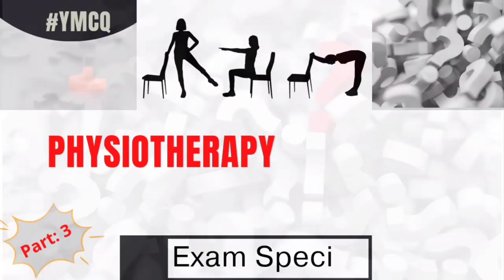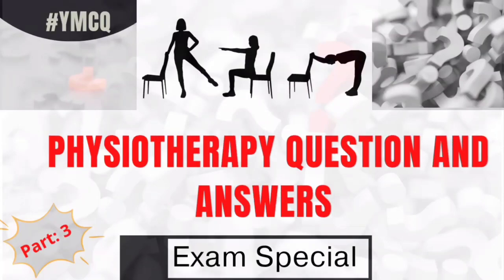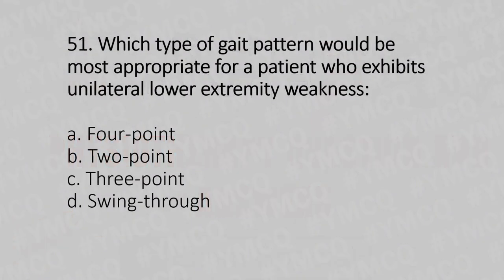Hello, welcome to Part 3 of the Physiotherapy Question and Answer MCQ Series. Question 51: Which type of gait pattern would be most appropriate for a patient who exhibits unilateral lower extremity weakness? Option A: four-point gait, Option B: two-point gait, Option C: three-point gait, Option D: swing-through. The answer is Option C, three-point gait.